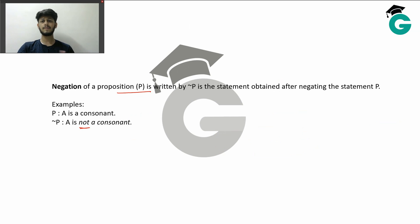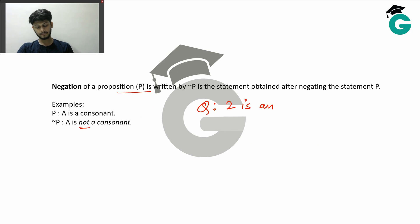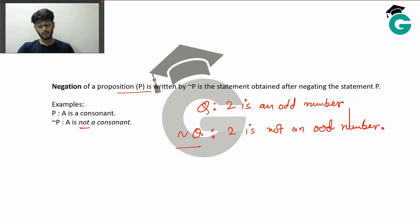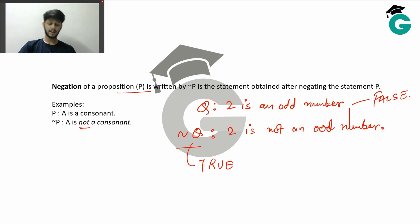For another example, say Q is '2 is an odd number.' The negation of Q is going to be '2 is not an odd number.' So not-Q is true — '2 is not an odd number' is true, but Q itself was false.